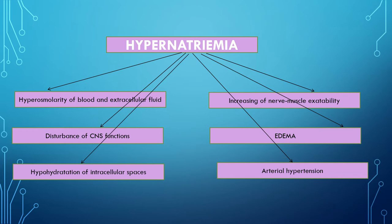Hypernatremia — increased blood sodium concentration — and positive sodium balance occur as a result of surplus sodium intake and disturbed elimination of sodium from the organism, for example during glomerulonephritis, primary and secondary hyperaldosteronism, and excessive intake of glucocorticoids. Hypernatremia leads to increased osmotic pressure of blood and extracellular fluid; intracellular fluid passes into extracellular space. Surplus sodium in extracellular fluid promotes retention of water in the organism and development of edema.